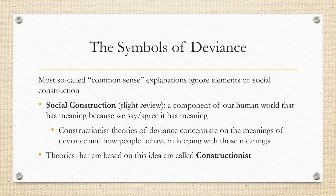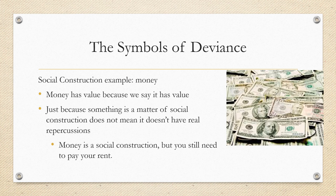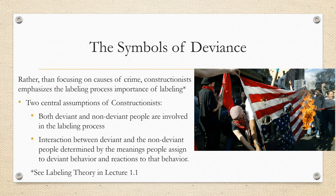Constructionist perspectives of deviance concentrate on the meanings of that deviance and how people behave in keeping with those meanings. Theories based on this idea are called constructionist. Here's a big visceral example of a social construction: money. Money has value because we as a society collectively say it has value. Just because something is a matter of social construction does not mean it doesn't have real repercussions — money is a social construct, but explaining that to your landlord does not mean you don't have to pay your rent. Rather than focusing on the causes of crime, constructionists emphasize the labeling process — you can look at labeling theory in lecture 1.1.